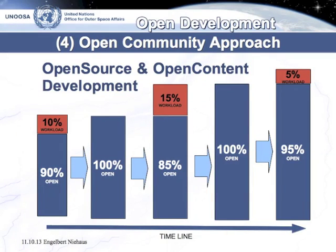The big benefit of open source and open content approaches is shown in the following diagram. A development may not be perfectly suited for your national application, so you add 10% additional workload to the 90% you get for free as an open source development. If you return that back, another member state or yourself can use 100% for free. If member states cannot afford the 5% workload for modifications, they could still cover 95% of all tasks with freely provided software, helping to apply public health risk mitigation tools.